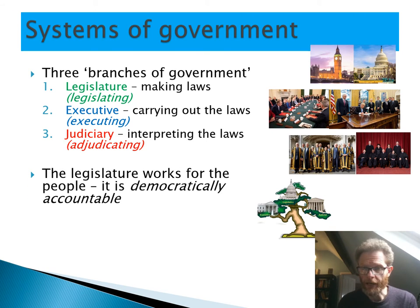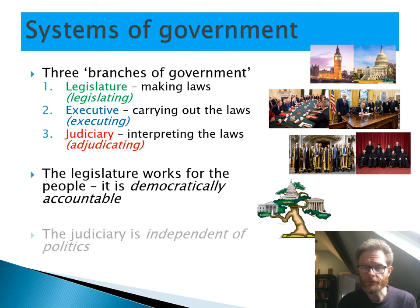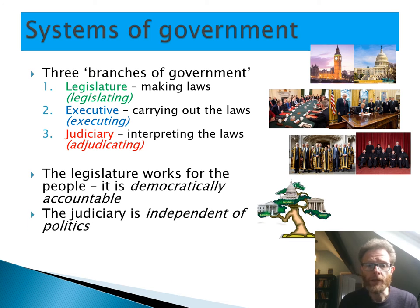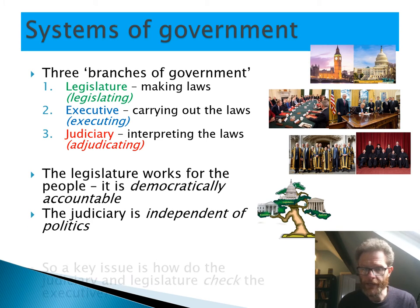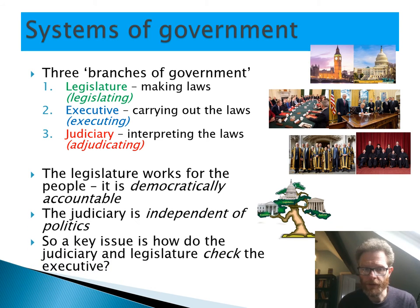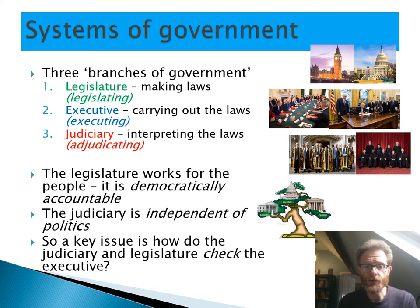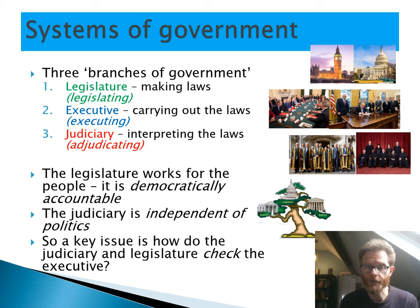The legislature — Parliament, Congress — is working for the people. The judiciary is outside of politics and must remain so. So a key question for us is, how is that executive controlled? How much power does the executive have over the people? And what are the roles of the other two branches?